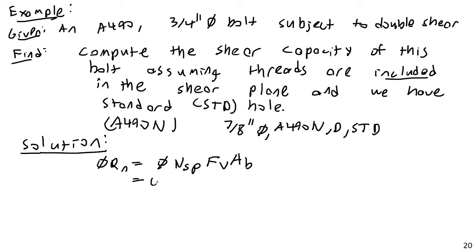And this is going to be 0.75, I really should have included this in the previous portion but that's okay, 0.75 times 2 for the number of shear planes. Now FV, which is the FNV found in table J3.2, and this is 68 KSI. And then the area of the bolt is just going to be pi over 4 times 0.75 inches quantity squared.